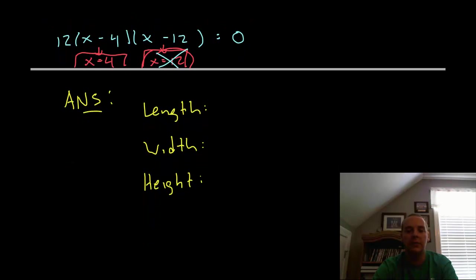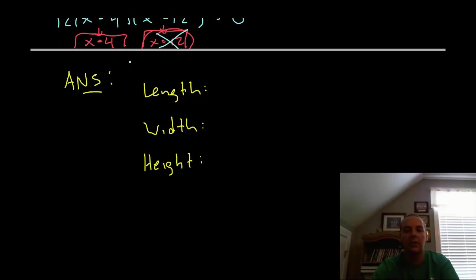So this x equals 4 looks like our answer here. Now the height was x, so the height would be 4 inches. The width was 24 minus 2x, so 24 minus 8, that would be 16 inches. And so would the length since it was a square base.